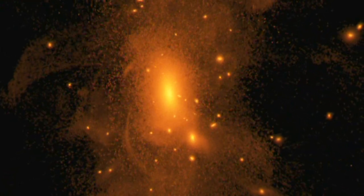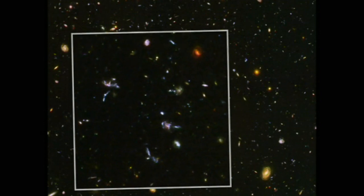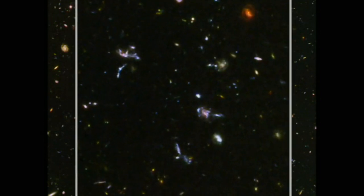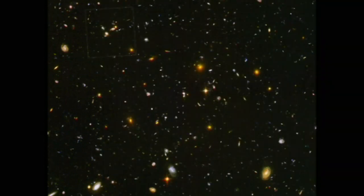The deep field images reveal a wide range of galaxies of various sizes, shapes, and colors. Astronomers will spend years studying the myriad shapes of the galaxies in this image to understand how they formed and have evolved since the Big Bang.